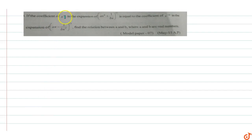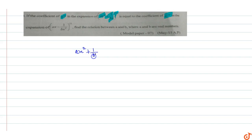In this question, if the coefficient of x raised to power 10 in the expansion of (ax² + 1/bx)^11 is equal to the coefficient of x raised to power minus 10 in the expansion of (ax - 1/bx²)^11, then find the relation between a and b, where a and b are real numbers.